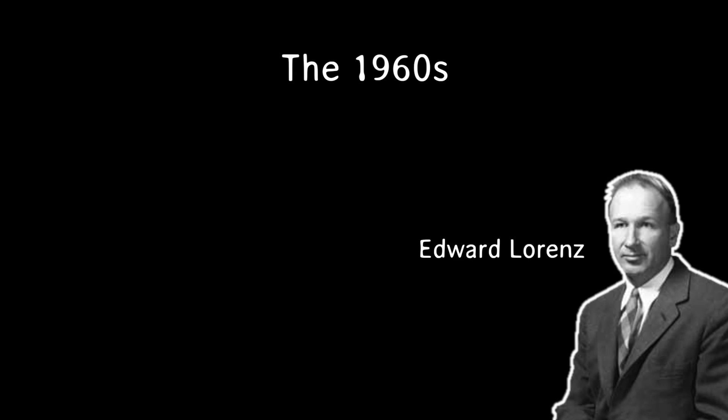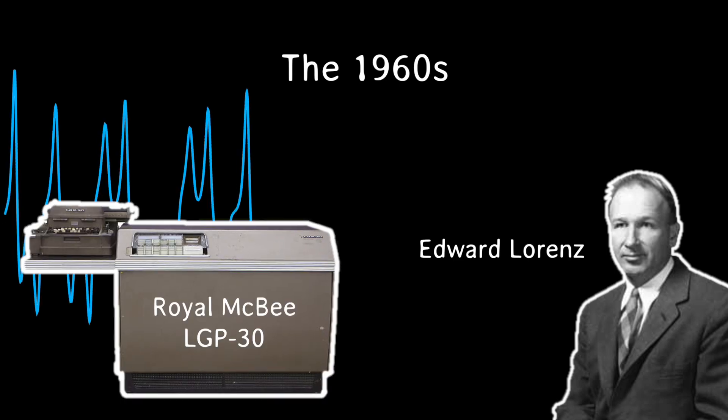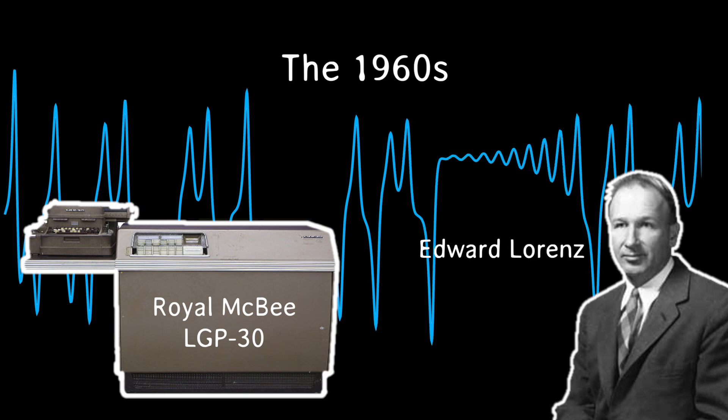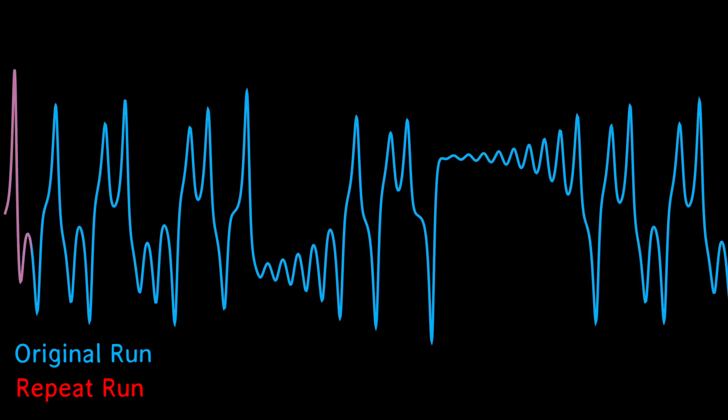In the 1960s, American mathematician and meteorologist Edward Lorenz was trying out a new computer weather model that predicted atmospheric conditions over time. And one day, Lorenz wanted more detail for a specific set of predictions, so he typed in the same initial conditions and ran his program again.